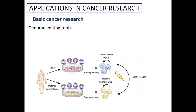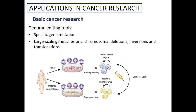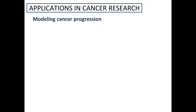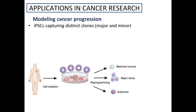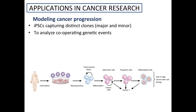iPS cells are good candidates for the introduction of precise genetic modifications by the CRISPR-Cas9 system or other genome editing tools. Susceptibility mutations can be engineered into normal iPS cells or corrected in cancer iPS cells to provide complementary isogenic systems. The CRISPR-Cas9 system can also be used to introduce large-scale genetic rearrangements such as chromosomal deletion, inversion, and translocation that are common in cancer. Regarding modeling cancer progression, reprogramming cells from a tumor can generate iPS cells that capture distinct clones at different states of cancer evolution, including dominant and minor clones. Premalignant iPS cells can be used to interrogate recurrent genetic events required for cancer progression, analyzing cooperating genetic events that are necessary for developing cancer.